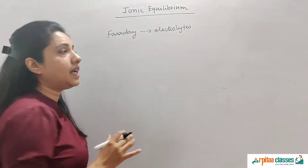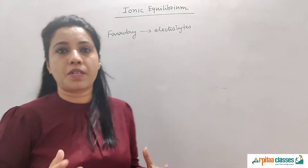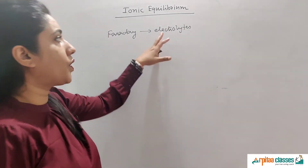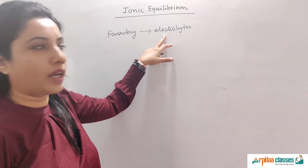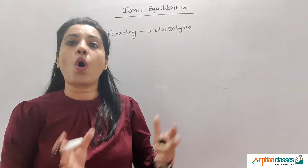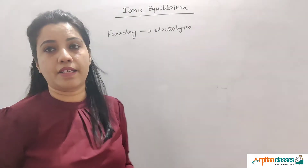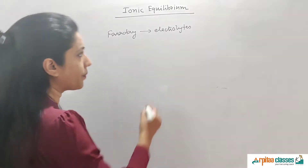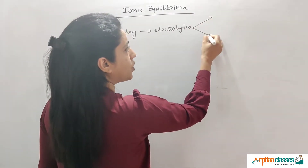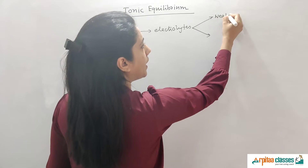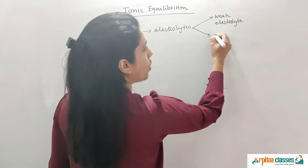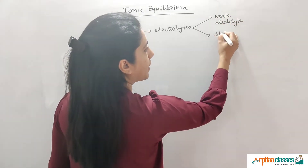Faraday said that any substance which, when dissolved in water or in the molten state, conducts electricity, is called an electrolyte. These electrolytes can be differentiated into two parts: weak electrolytes and strong electrolytes.